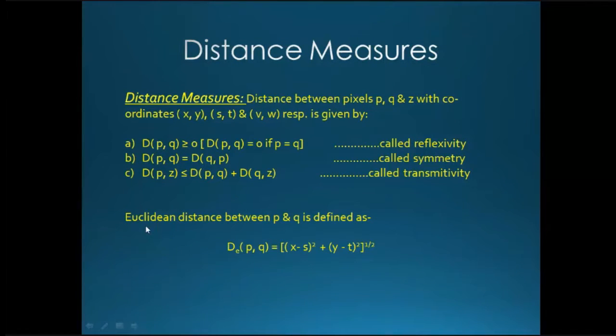The next is Euclidean distance between p and q. So Euclidean distance, the formula is that x minus s the whole square plus y minus t the whole square, the whole thing in root. This is Euclidean distance.